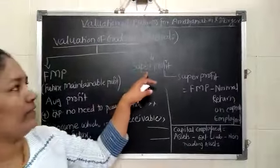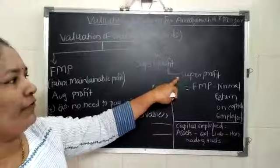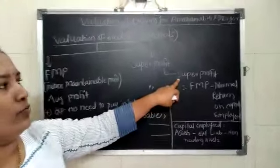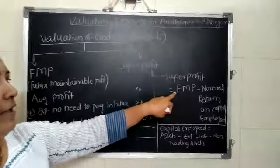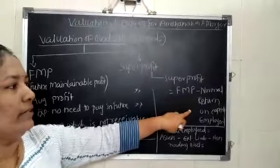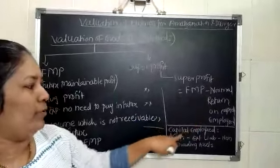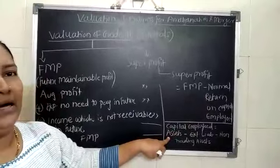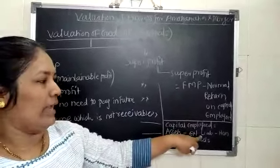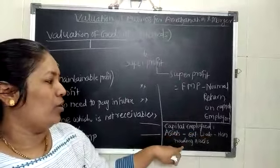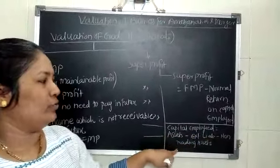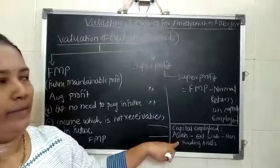Now the another method is super profit. The super profit, when we are calculating super profit, the formula is FMP minus normal return on capital employed. So what is capital employed? Capital employed means the assets minus external liabilities minus non-trading assets. That gives you the trading capital employed.